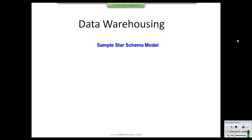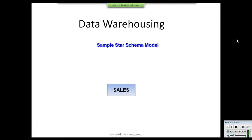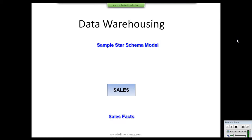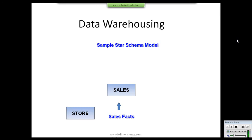Every data warehouse consists of dimension tables and fact tables. How these dimension and fact tables are arranged is known as a schema. In a star schema, the dimension tables and fact table are arranged in a way that looks like a star — that's why it is called a star schema.